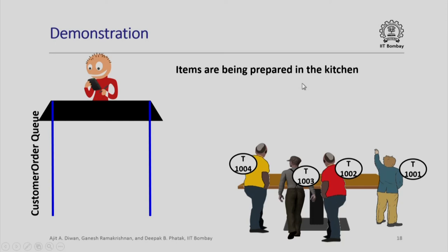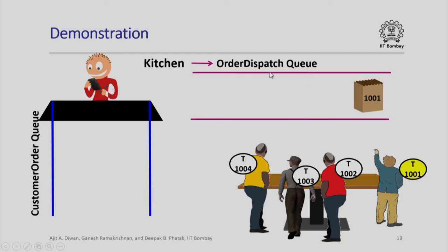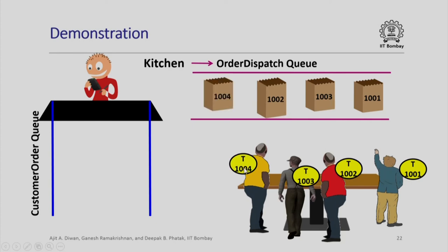All items are being prepared in the kitchen, and we assume some arbitrary time for order preparation, according to which orders will be dispatched. Let us look at the kitchen order dispatch queue. The first order to be prepared is 1001, which comes into the dispatch queue and the person with token T1001 receives their order. The second order is 1003, since different orders take different preparation times, so T1003 gets their order next. Then T1002 gets their order, and last is T1004. In short, orders may be placed in sequence such as 1, 2, 3, 4, but the kitchen dispatch depends upon the time required for preparation of each order.